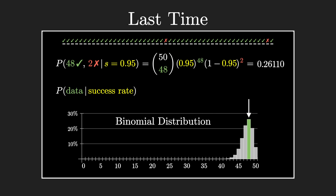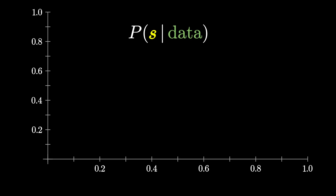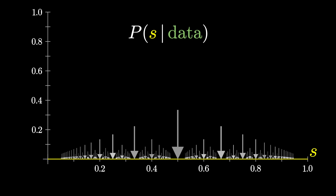How does the limited data that we see from random events inform our judgment about the true underlying probabilities at play? What we talked about last time was the probability of seeing some of this review data if you knew the success rate. Here, we're going to use Bayes' rule to turn that around, getting a sense for the probability of different success rates given the fixed data. One thing making this tricky is that there's an infinite continuum of possible values for what S equals, and if you want a distribution for the probability of S based on the data, that probability has to somehow get divided among this uncountably infinite set of possibilities.